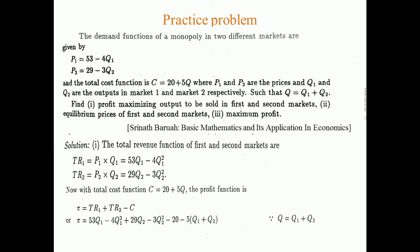Let us take an example. The demand functions of a monopoly in two different markets are given by p1 = 53 − 4q1 and p2 = 29 − 3q2, and the total cost function is C = 20 + 5q, where p1 and p2 are the prices and q1 and q2 are the outputs in markets 1 and 2 respectively, and q = q1 + q2.